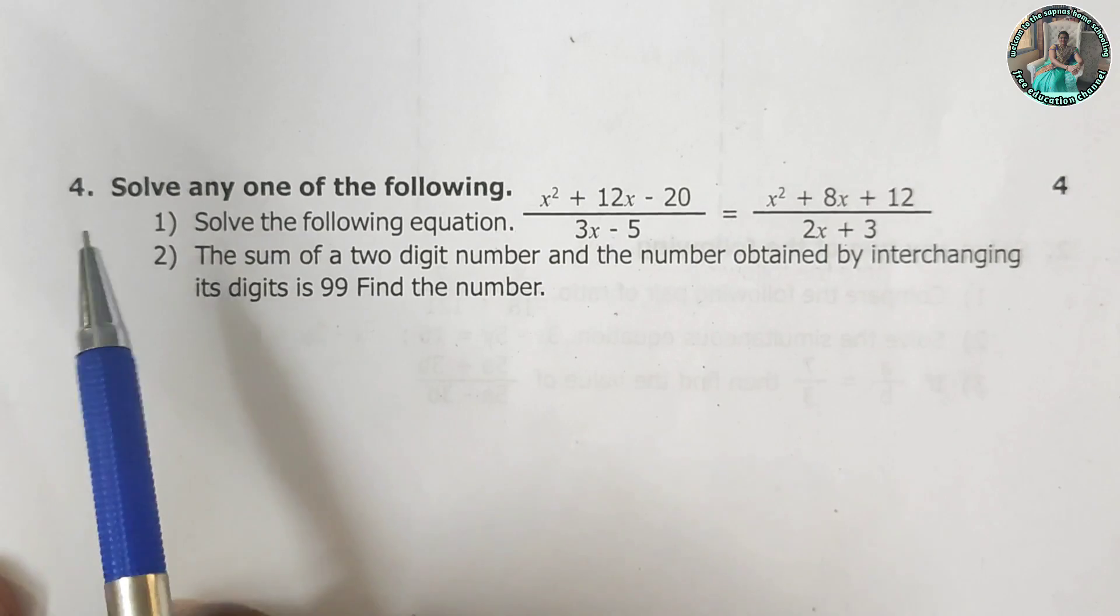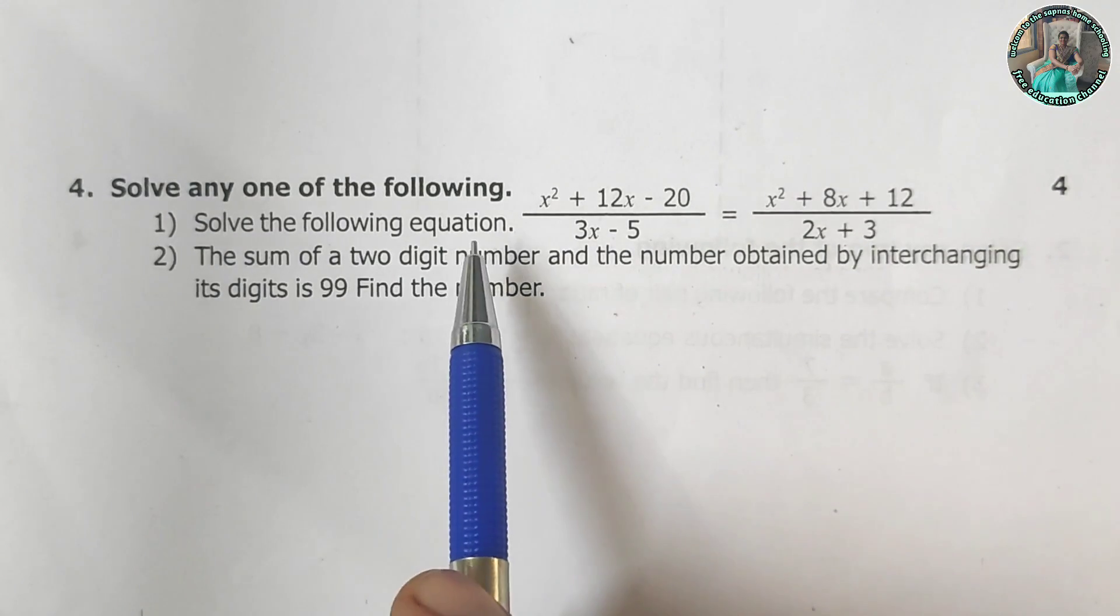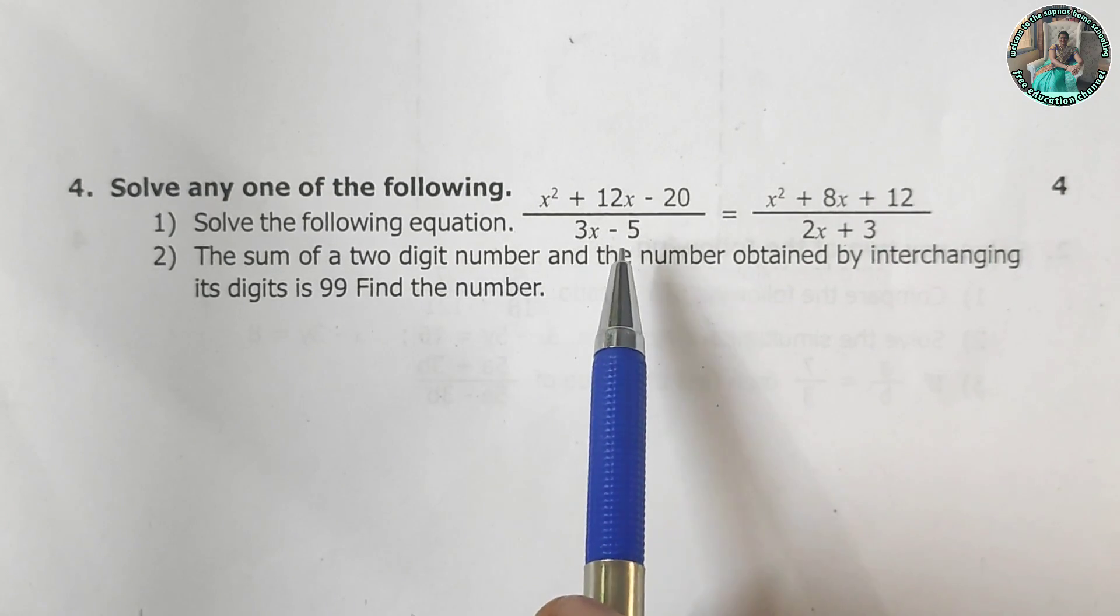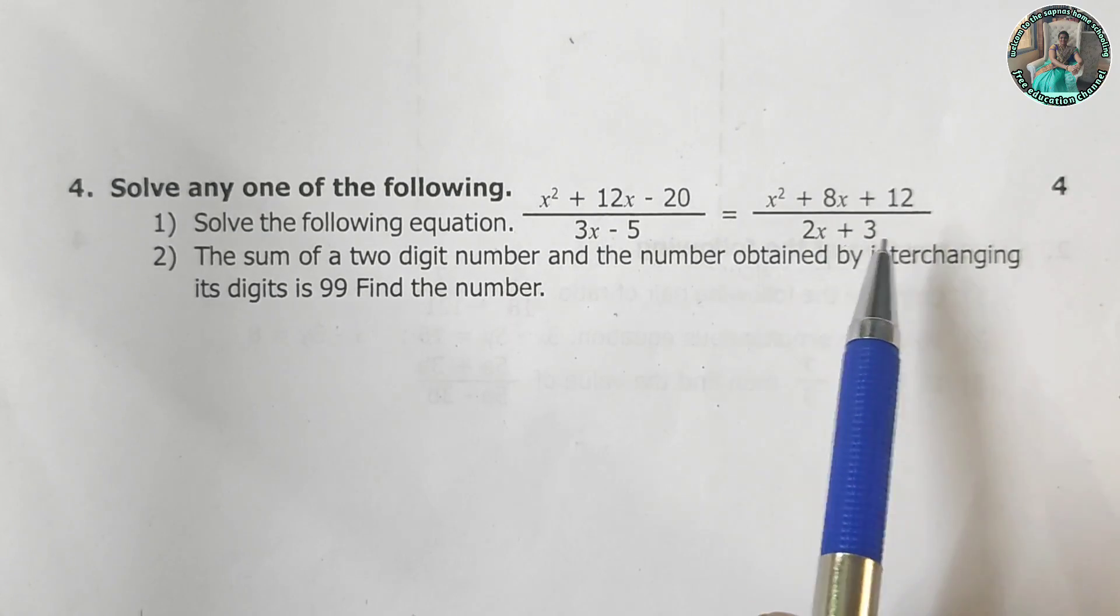Now question 4. Solve any one of the following for 4 marks. Solve the following equation. x square plus 12x minus 20 upon 3x minus 5 is equal to x square plus 8x plus 12 upon 2x plus 3.